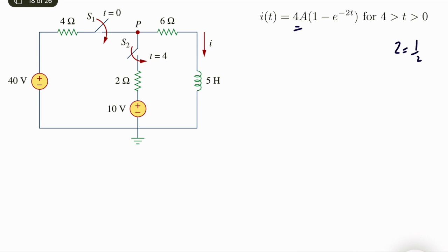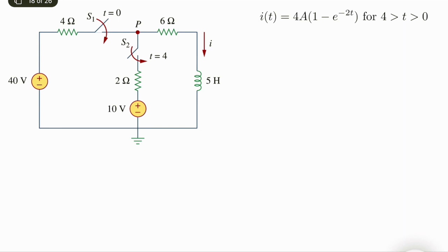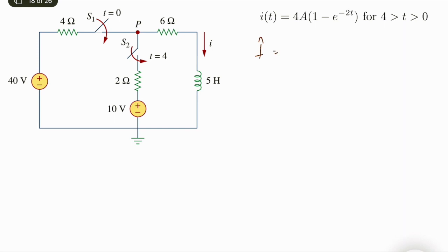At t equals 4 we are changing to a new circuit. For multiple switches activated at different times, I recommend defining a shifted variable t-hat, where t-hat equals t minus 4. When t equals 4, t-hat equals 0. So from the perspective of t-hat, the second switch is activated at t-hat equals 0.